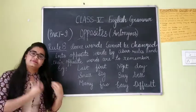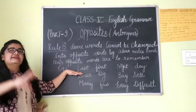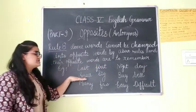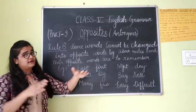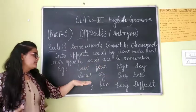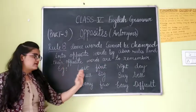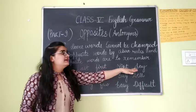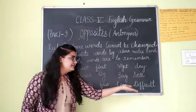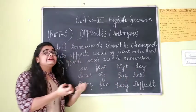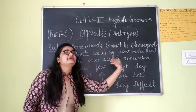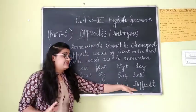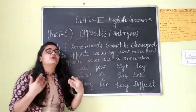Let's take some examples. 'Last' — its opposite is 'first.' 'Small' — 'big.' 'Many' — 'few.' 'Night' — 'day.' 'Buy' — 'sell.' 'Easy' — 'difficult.' These word pairs are very different from each other.